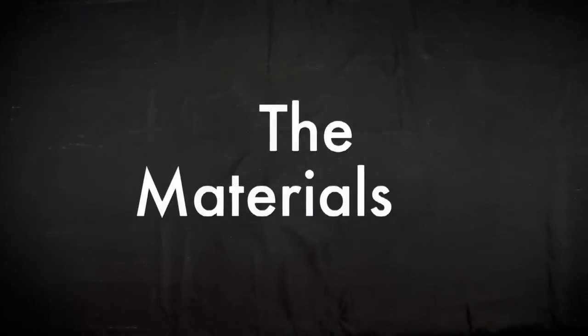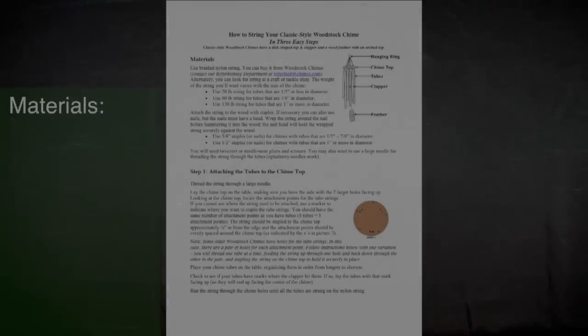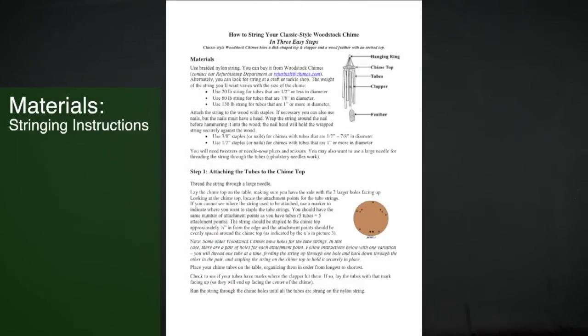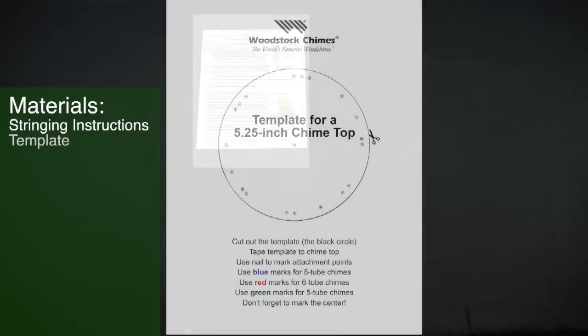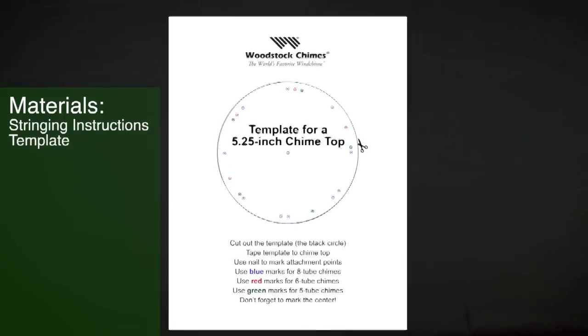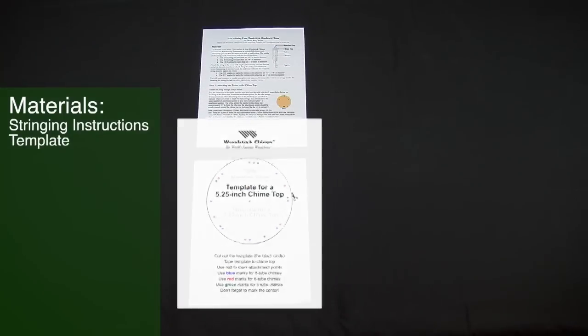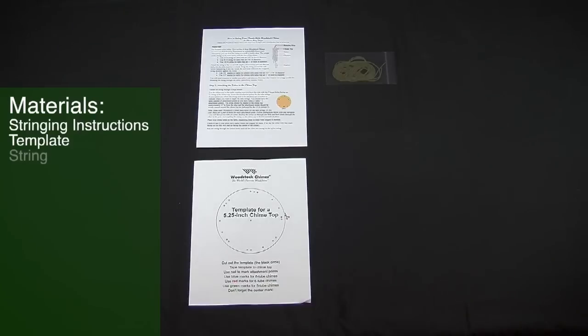Here are the materials you will need. The Woodstock Chime stringing instructions included in your kit or downloaded off of our website chimes.com. The template that comes in your kit or you can also download one off of chimes.com. String.